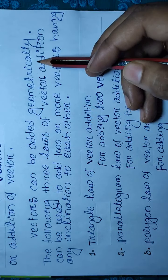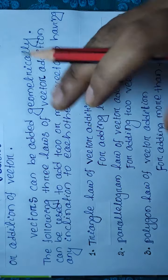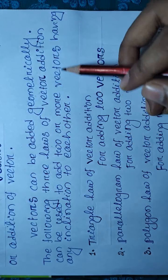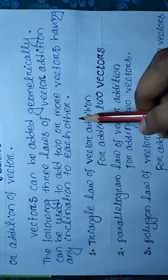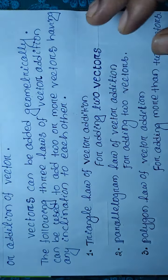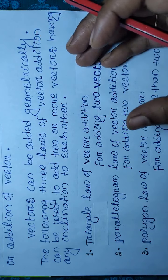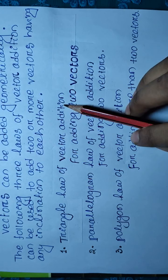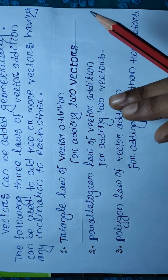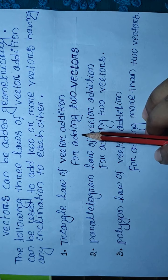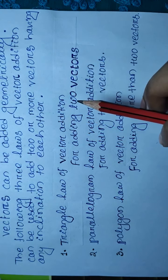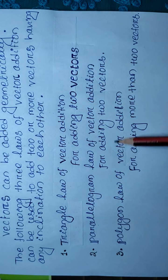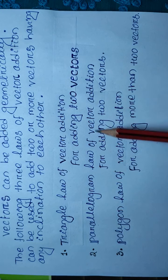Vectors can be added geometrically with both magnitude and direction. The following three laws of vector addition can be used to add two or more vectors having any inclination to each other. The first is the triangle law of vector addition, used for adding two vectors, from which we can find the resultant vector's magnitude and direction. The second is the parallelogram law of vector addition, also for adding two vectors.